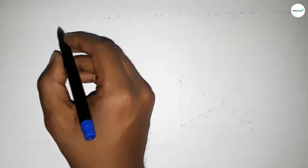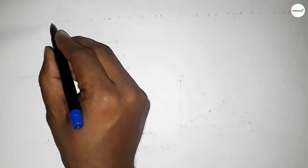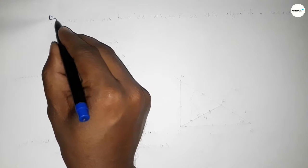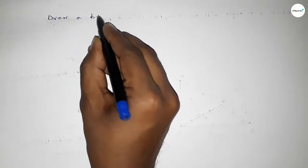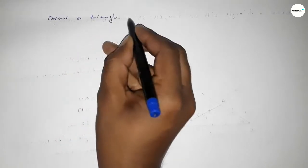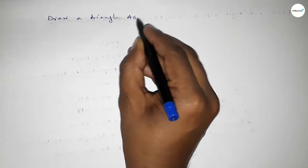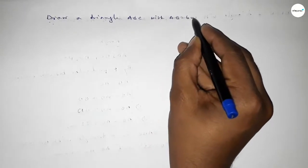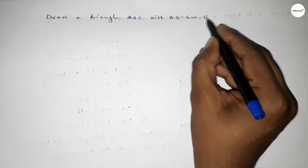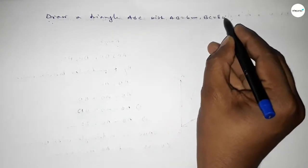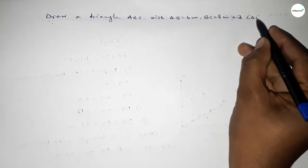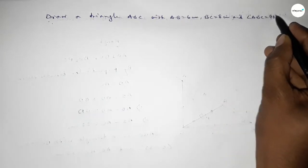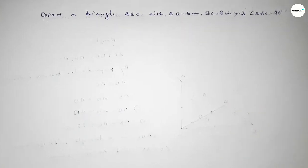Hi everyone, welcome to SI Share Classes. Today in this video we have to draw a triangle ABC with AB equal to 6 centimeters, BC equal to 8 centimeters, and angle ABC equal to 40 degrees. Let's start the video.